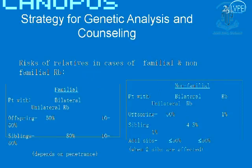In genetic analysis and counseling for retinoblastoma, you can give general risks regardless of genetic testing. For bilateral familial retinoblastoma, being autosomal dominant, there is a 50% risk in offspring and siblings. For unilateral cases, risk ranges from 10% to 50% because 10% of unilateral RB is hereditary. In non-familial bilateral RB, which usually results from a new germline mutation, offspring risk is 50% and sibling risk is up to 5%. For unilateral RB, risk is only about 1%, as it is generally not hereditary.